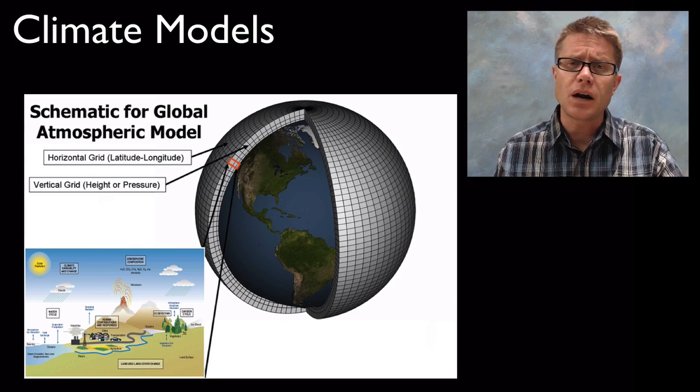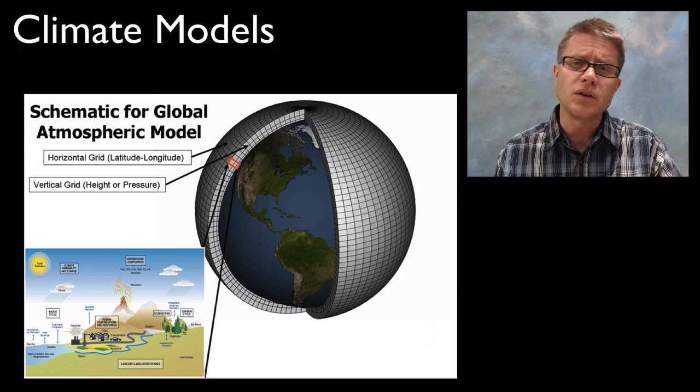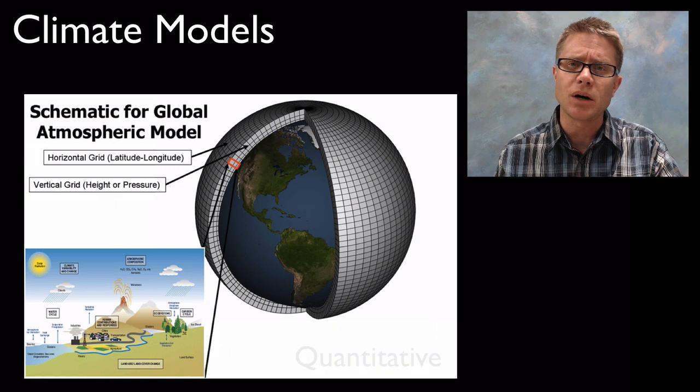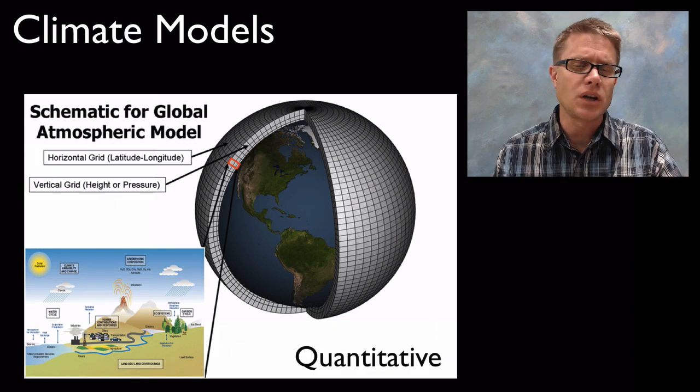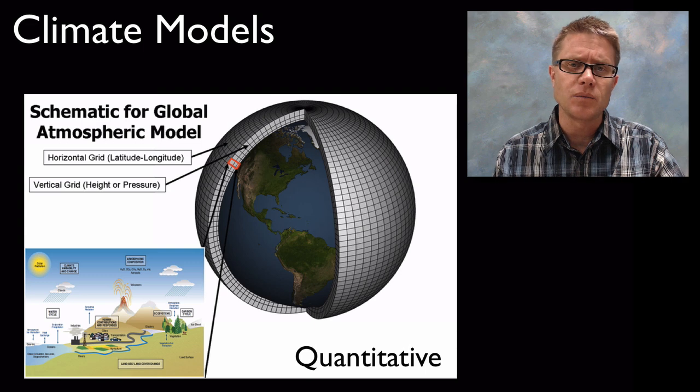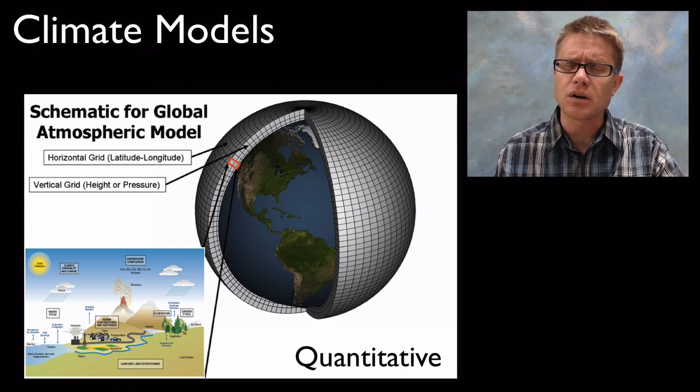The climate is changing and humans are having impacts on that. So where do we go from here? How do we figure out what's going to happen in the future? We use what are called climate models. A climate model is going to be quantitative in nature, it's going to be numerical, and generally we use computers to develop these climate models because they're incredibly complex.